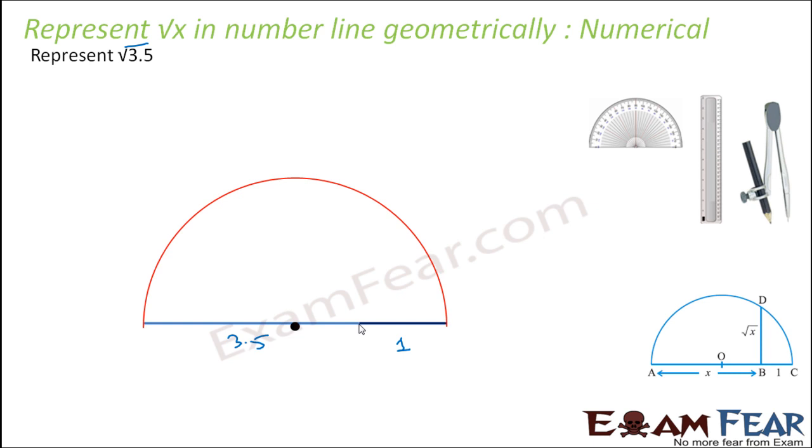And now at this point, from this point I will draw this line. This line will be 90 degree. And this line will touch the semicircle at this point. So this point is my root 3.5 if you put the values AB. AB is my root 3.5.